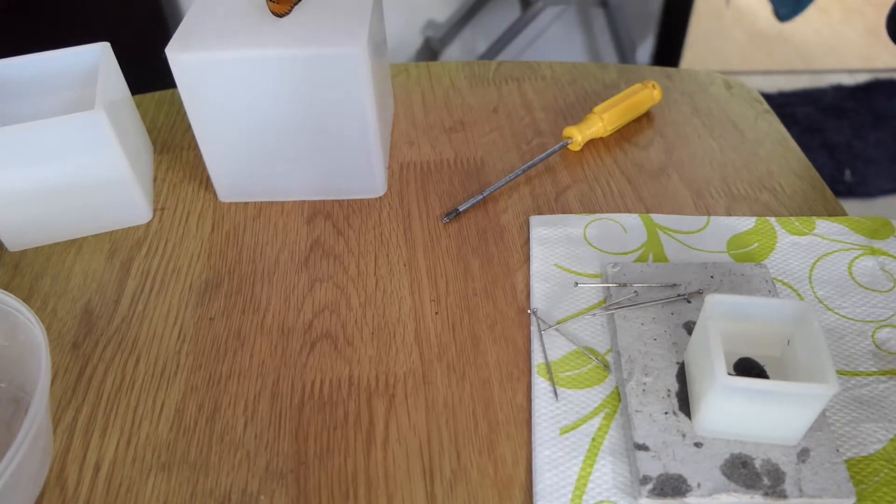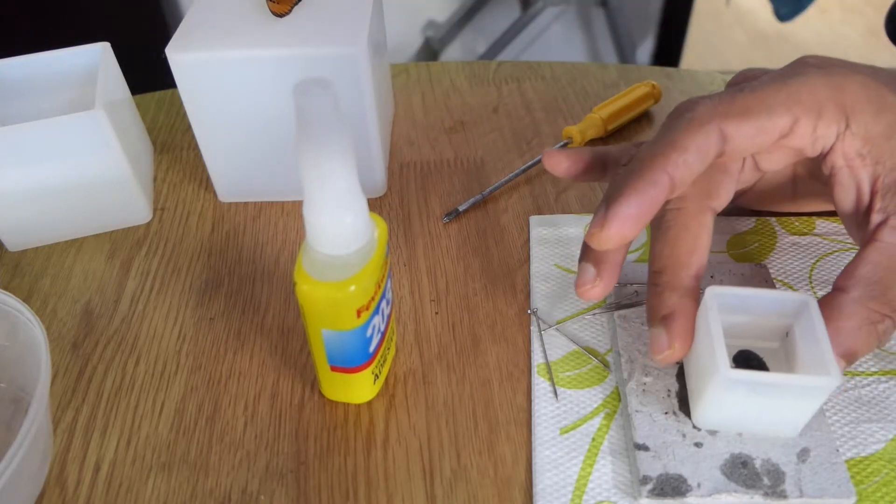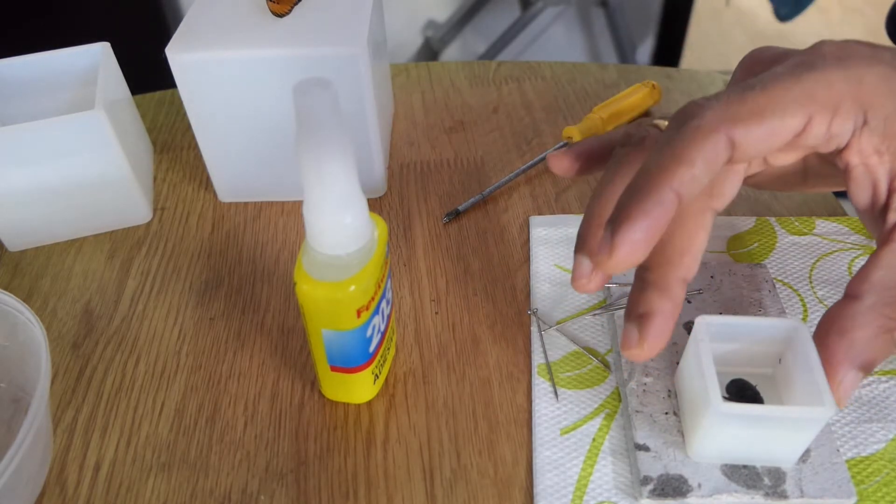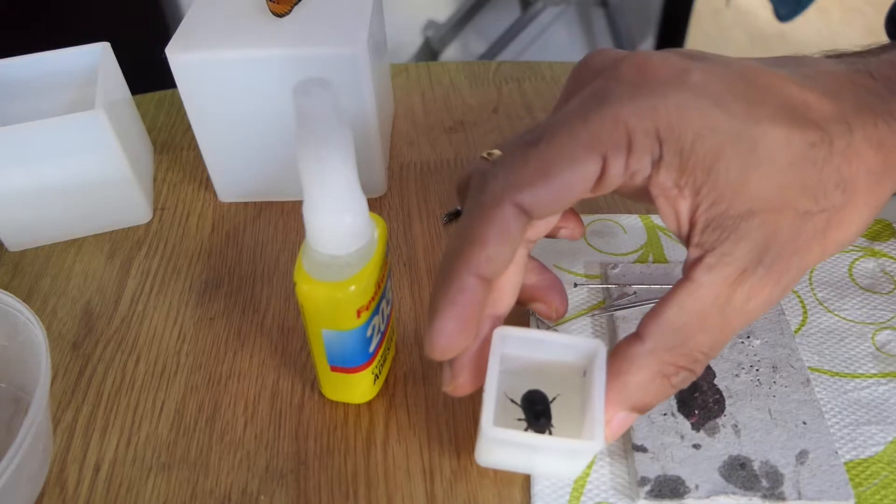The glue will also become solid because it's also made out of acrylic. So I poured the glue to the bottom layer and let the beetle sit in the position that I wanted, and it seemed to be working.